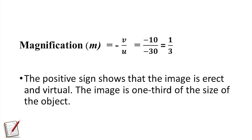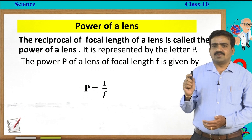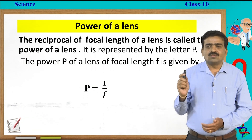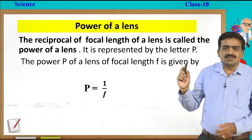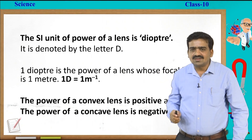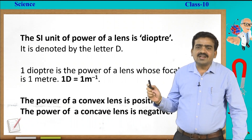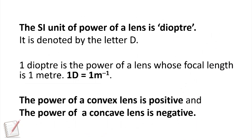Let us come to the last concept of today's session: power of a lens. The power of a lens is the reciprocal of the focal length of the lens, represented by the letter P. The power P of a lens with focal length f is given by P = 1/f. The SI unit of power of a lens is dioptre, denoted by the letter D. One dioptre is the power of a lens whose focal length is 1 metre, that is, 1 D = 1 m⁻¹. The power of a convex lens is positive and the power of a concave lens is negative.